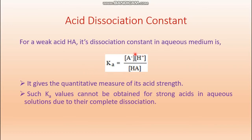Ka gives a quantitative measure of acid strength. The stronger the acid, the more dissociation takes place, and the higher the value of Ka. If it is a weak acid, Ka is less; if it is a strong acid, Ka is high. However, such Ka values cannot be obtained for strong acids in aqueous solutions due to their complete dissociation. For strong acids like hydrochloric acid, sulfuric acid, and nitric acid, the undissociated form becomes zero, making the denominator zero, so Ka is undefined.